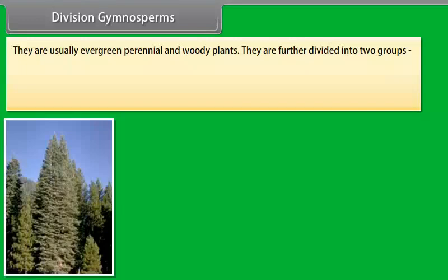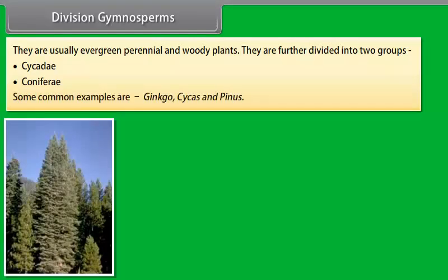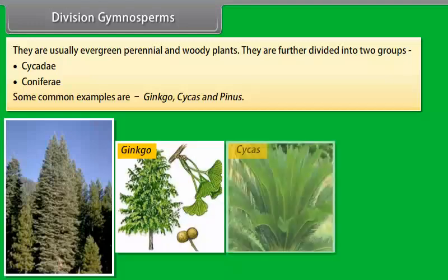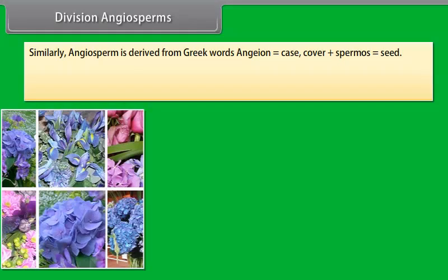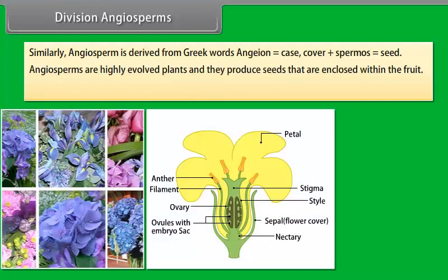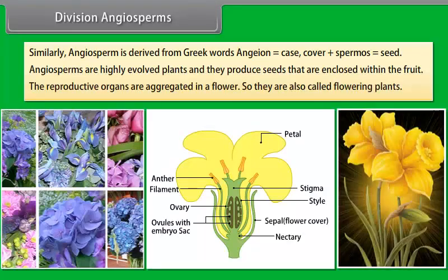Division Pteridophyta. Pteridophyta is derived from the Greek words Pteris, meaning fern, plus Phyta, a plant. The plant's body is commonly differentiated into root, stem and leaf. There is specialized tissue to conduct water and minerals from one part of the plant body to the other. Some common examples are Marsilea, Lycopodium, Selaginella, Equisetum, Azolla, Adiantum, and Dryopteris.